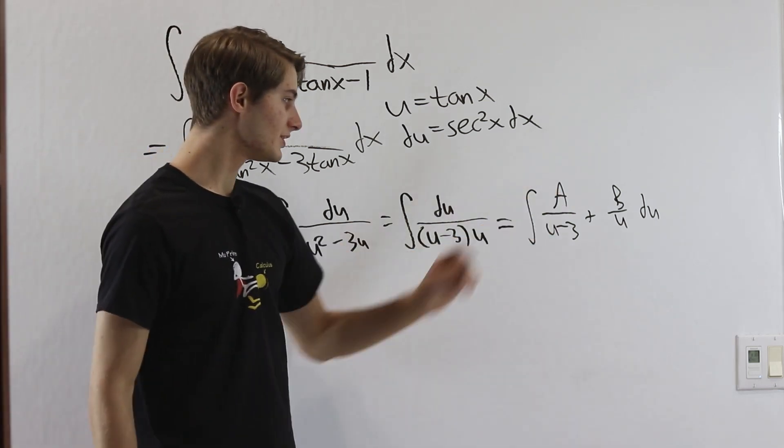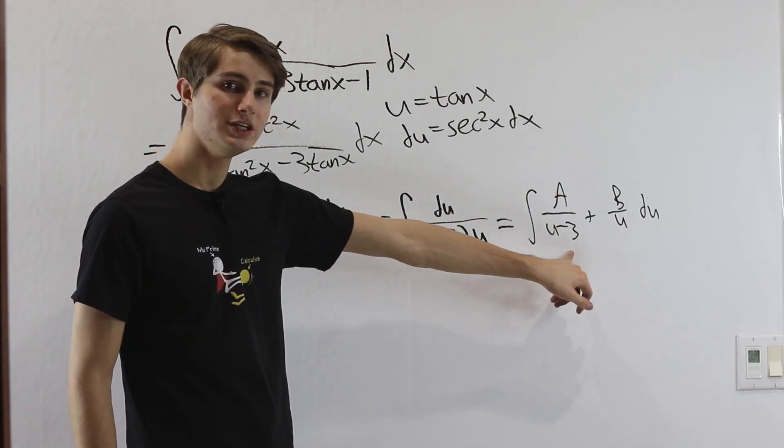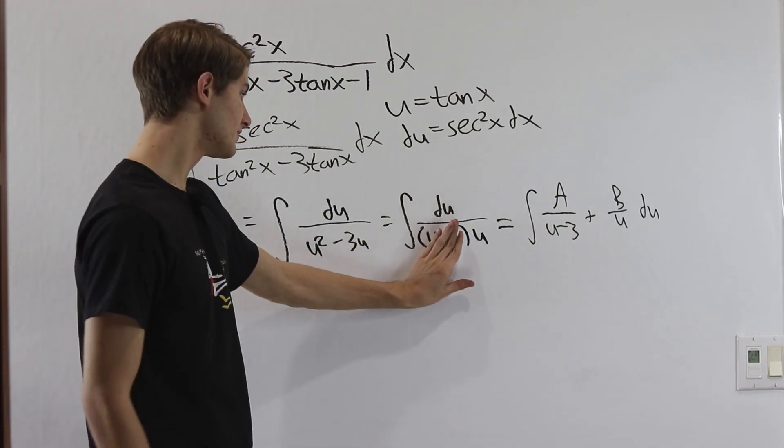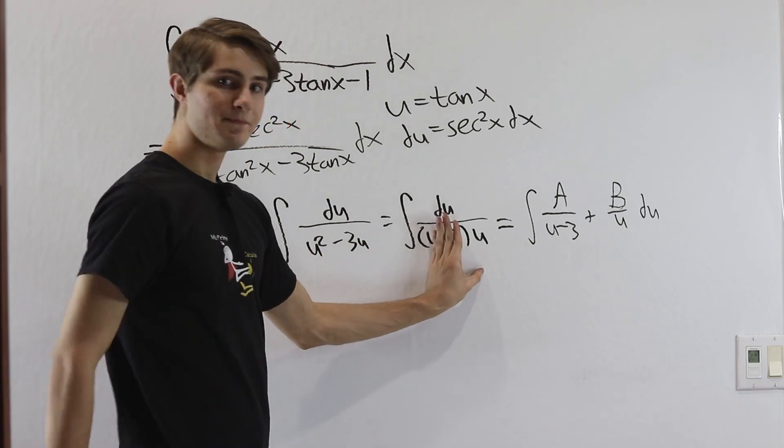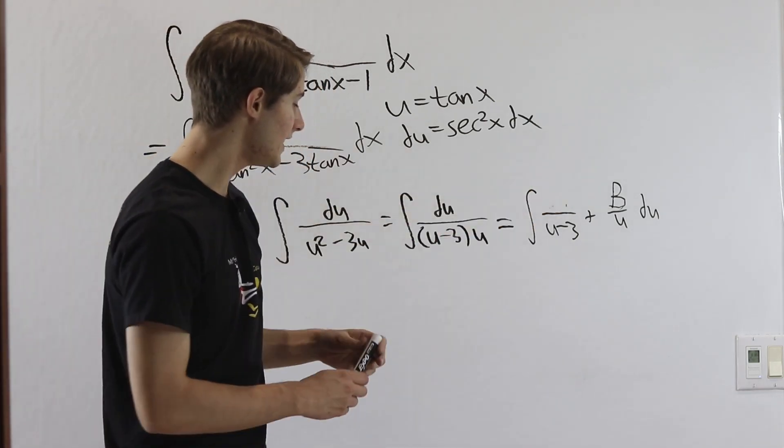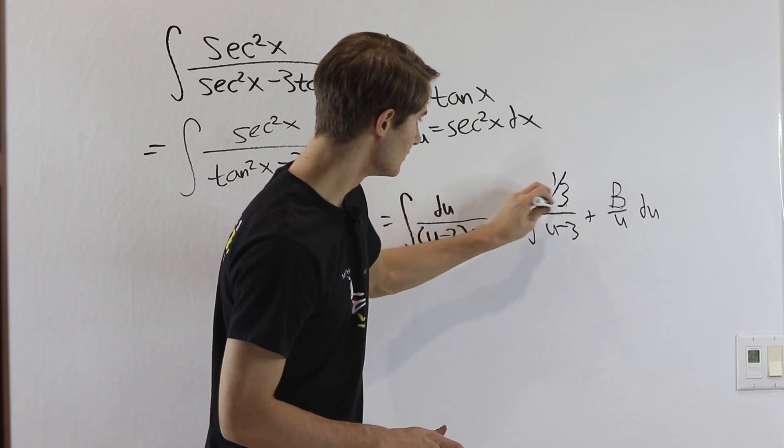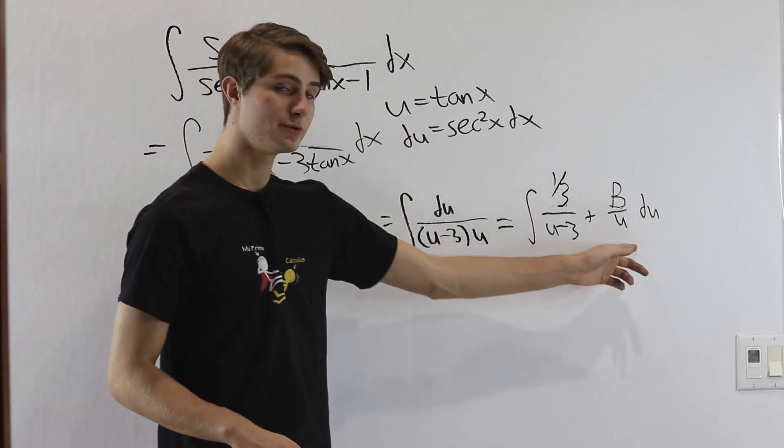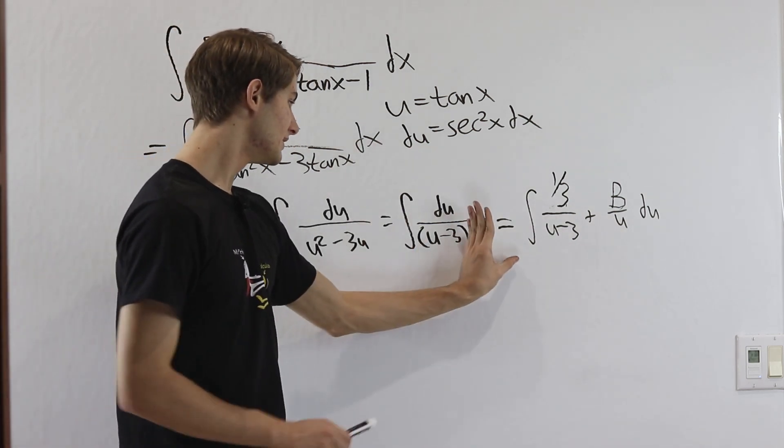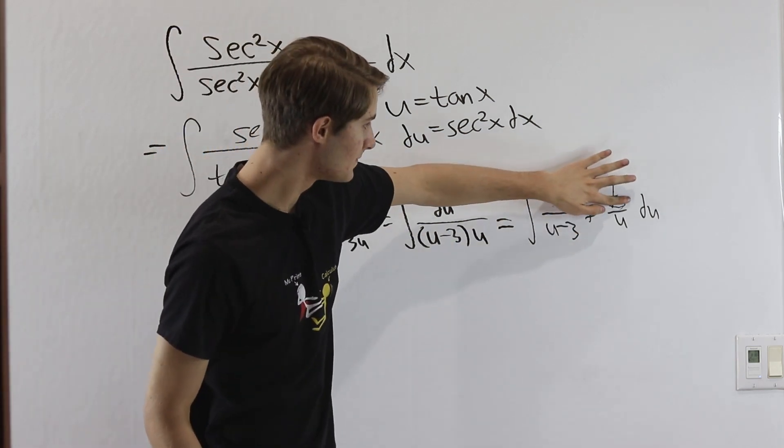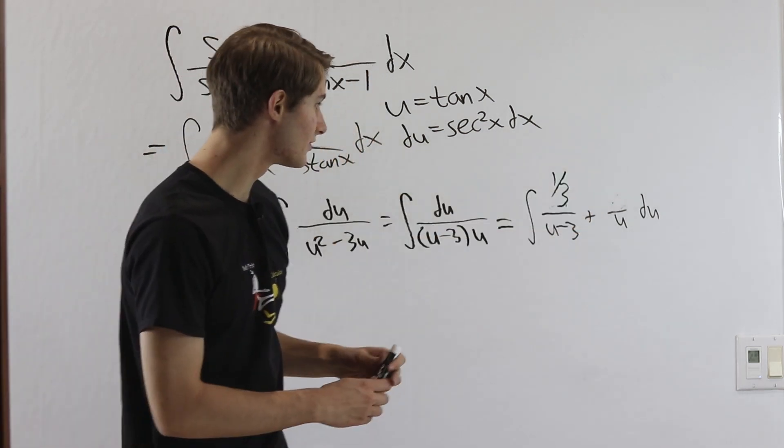So to start off we want to solve for a. u minus 3 equals 0 means u equals 3. So you go over here cover this up. 1 over 3 obviously that's going to give us 1 third. So we go over here a is equal to 1 third. Now if we want to solve for b we set u equals 0 that means u equals 0. So we go over here 1 over 0 minus 3 is 1 over negative 3 or negative 1 third.